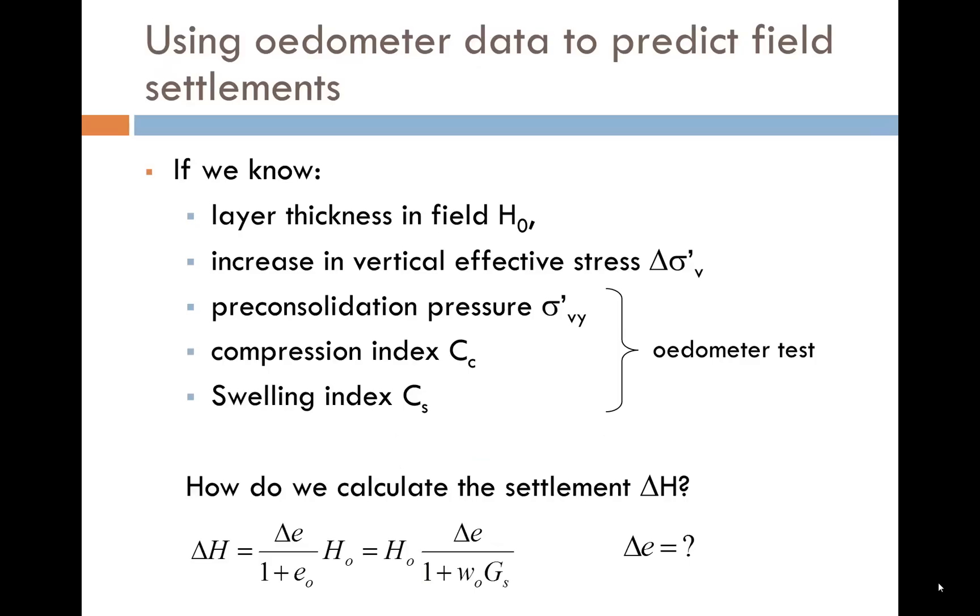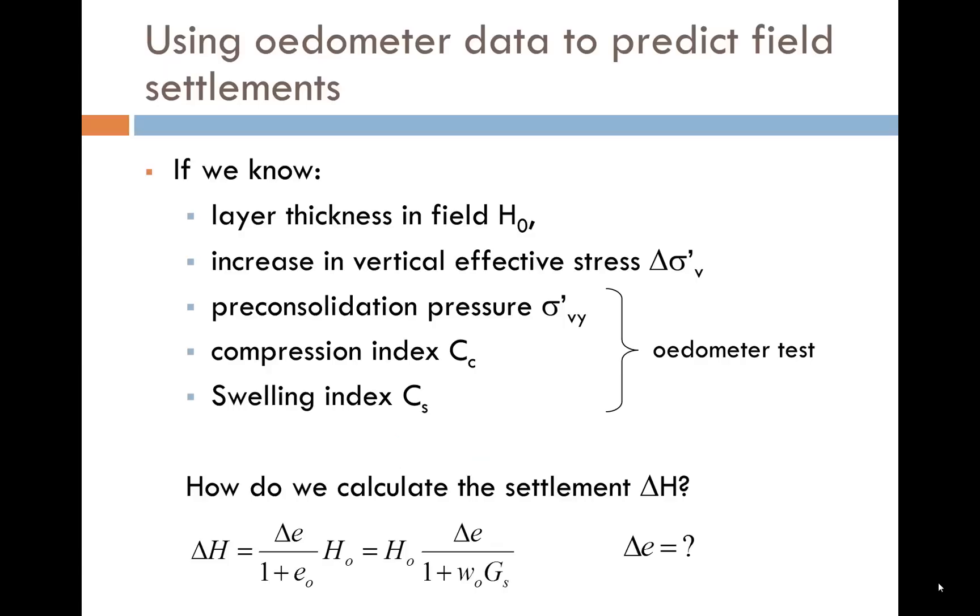The main goal of this section is to calculate the soil settlement corresponding to a change in vertical effective stress. If we know the layer thickness in the field H0, the increase in vertical effective stress Δσ'v (it might be from an embankment for example), the pre-consolidation pressure σ'vy, the compression index Cc, and the swelling index Cs, how do we calculate the settlement ΔH?